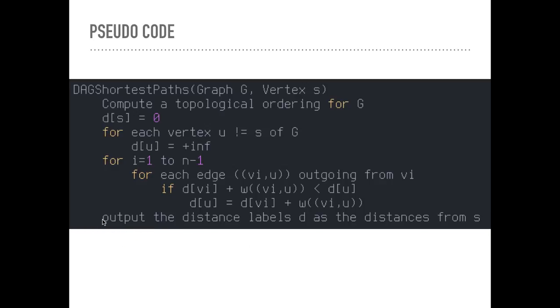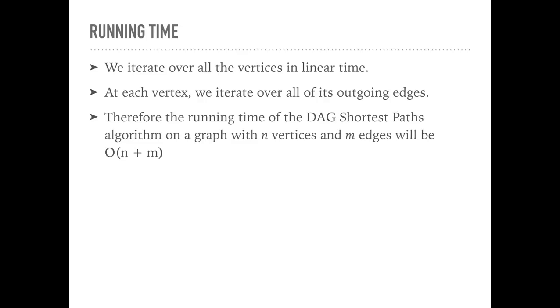Then we just chose to output the distance labels d, which are the distances from s. Pretty simple. Nothing we haven't seen before.